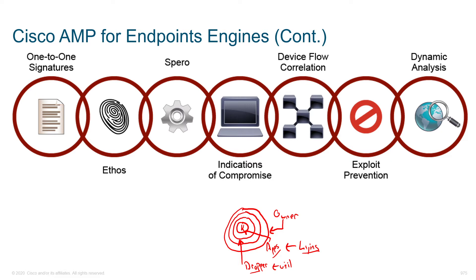Coming back to AMP: it has many capabilities — Ethos, Sparrow, et cetera. The device flow correlation (DFC) it performs is a kernel-level view, so we're looking at what's going on within the operating system at the lowest level. This gives us insight we might be missing otherwise. We're monitoring access to both internal and external networks, looking at who it's talking to based on IP reputation data, URL and domain logging, and integrating intelligence from things like WSA and Senderbase to determine who we're actually talking to, giving us very rich contextual data.